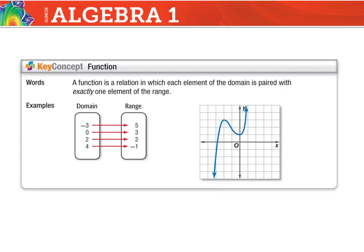Here's one of our big things for today, and we're going to talk about this all year long: what makes a function a function? A function is a relation in which each element of the domain — so these are our x values — is paired up with one element of the range. What they don't tell you here is that it can be paired up with the same element of the range. We could have multiple x values like negative 3 and 0 both going to the same number 5, and that still makes it a function.